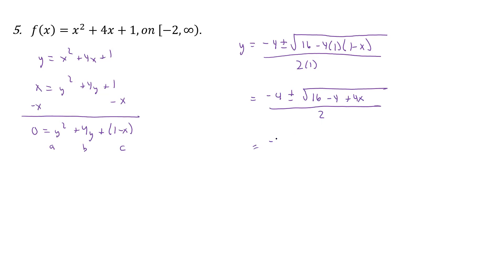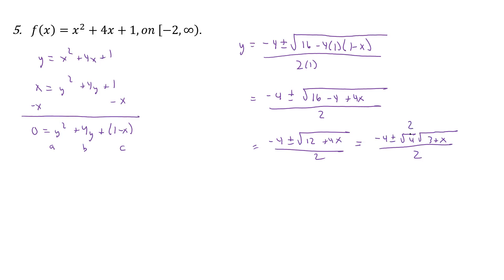Expanding under the radical: 16 minus 4 times 1 is minus 4, and minus 4 times negative x is plus 4x. So we have 16 minus 4 plus 4x, which is 12 plus 4x, all over 2. We can factor out a perfect square of 4 from under the radical, giving us negative 4 plus or minus 2 times the square root of 3 plus x, all over 2. The 2 in the numerator cancels with the 2 in the denominator, leaving us with negative 2 plus or minus the square root of 3 plus x.